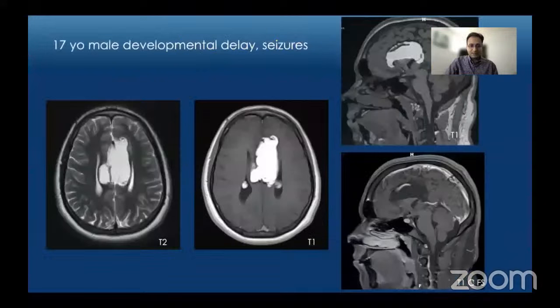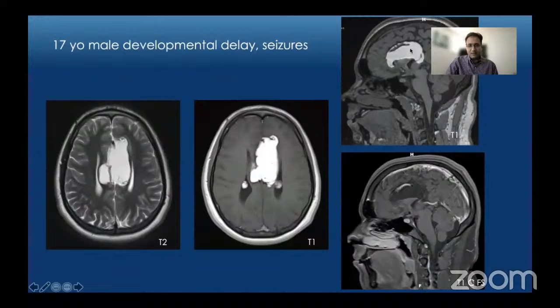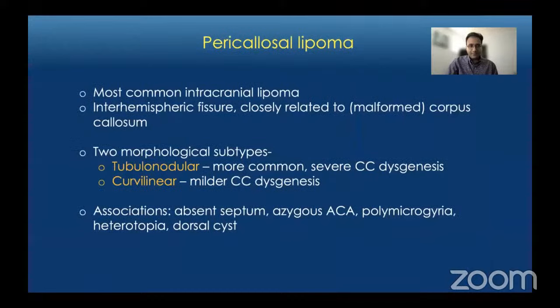This companion case is a 17-year-old male with developmental delay and seizures. On axial T2 and T1-weighted images we see a lobular hyperintense mass in the midline in the expected location of the corpus callosum, with parallel orientation of the lateral ventricles. On sagittal T1-weighted images we see a lobular T1 hyperintense mass in the region of the corpus callosum, which completely suppresses on fat-saturated sequences. There is an enhancing vessel through that region, suggesting a pericallosal lipoma with dysgenesis or absence of the corpus callosum.